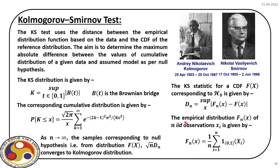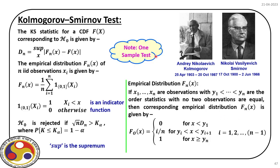Based on these KS statistics, we can conclude whether the null hypothesis is accepted or rejected. For the one-sample test, the KS statistic Dₙ is the supremum over x of |Fₙ(x) - F(x)|. The null hypothesis is rejected if √n × Dₙ is greater than the critical value from the KS table. The critical value corresponds to probability P(K ≤ Kα), where Kα comes from the given level of confidence α.